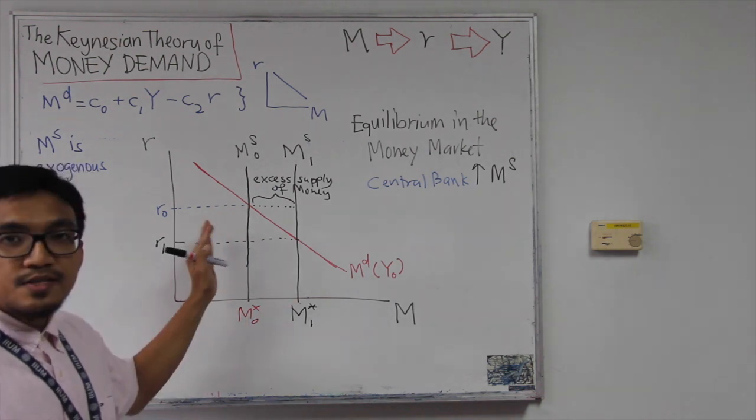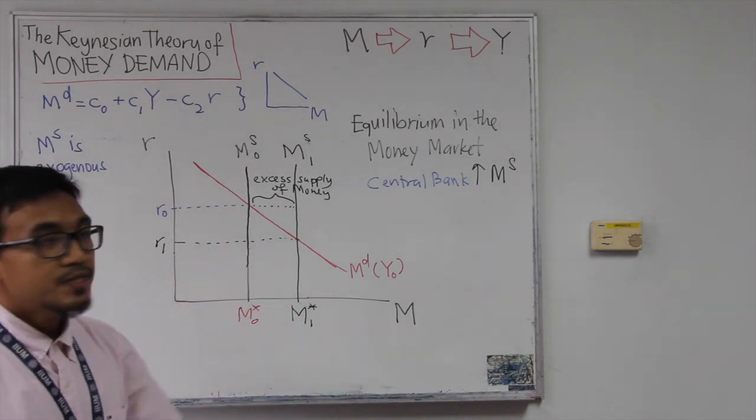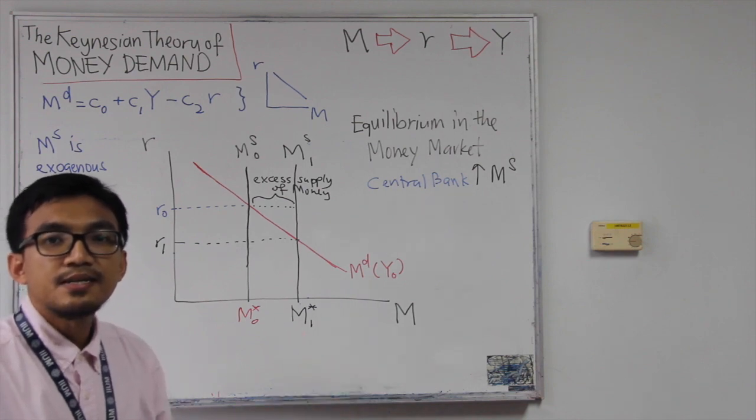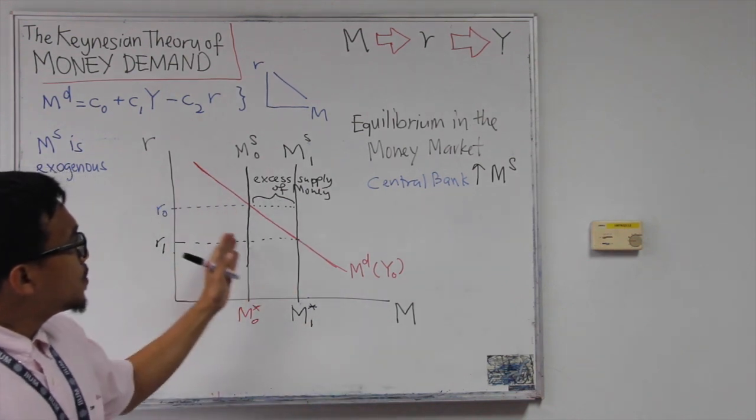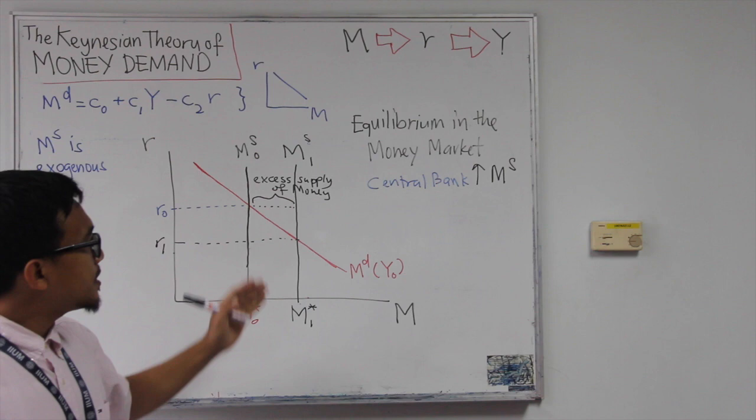Now, is this story complete? I mean, like when central bank simply increase money supply. So all these things, adjustment takes place.